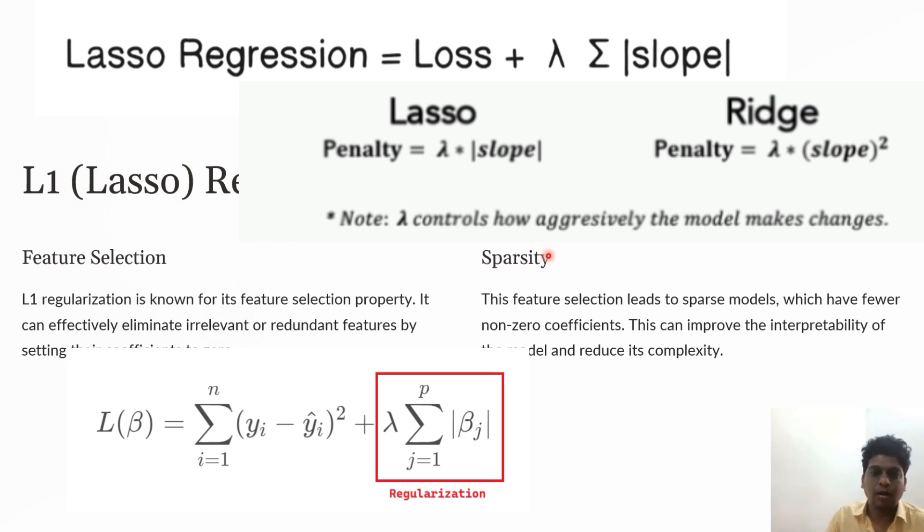Sparsity: feature selection leads to sparse models with fewer non-zero coefficients, reducing model complexity.